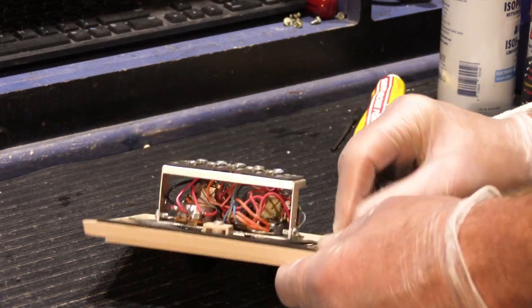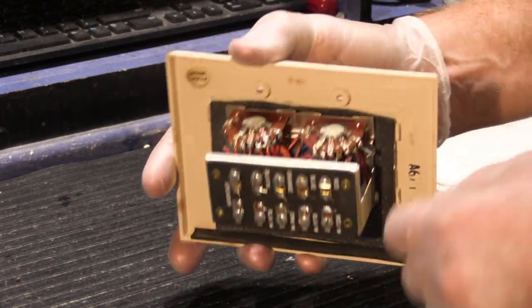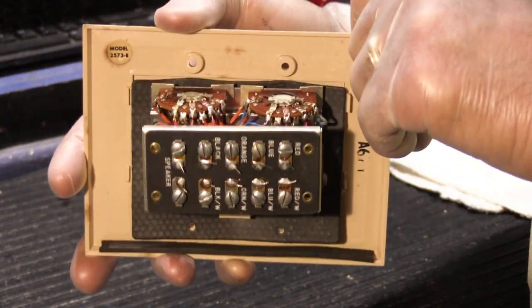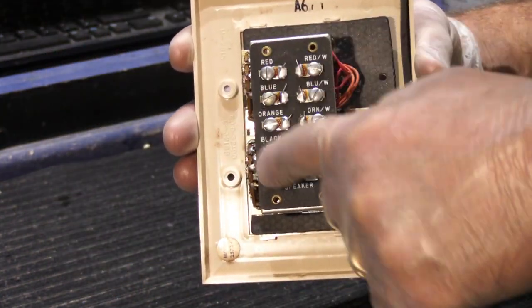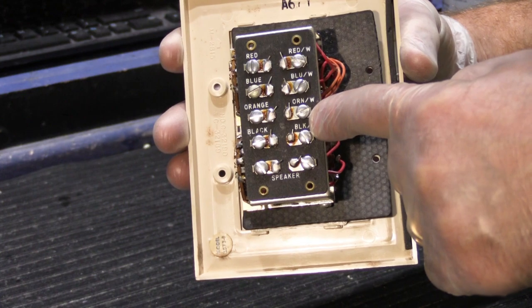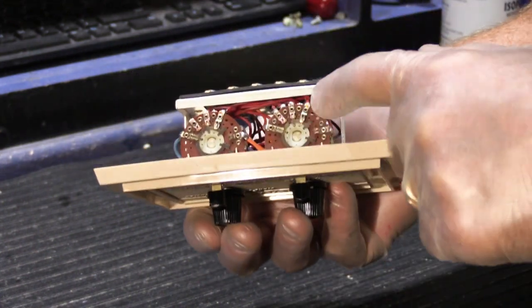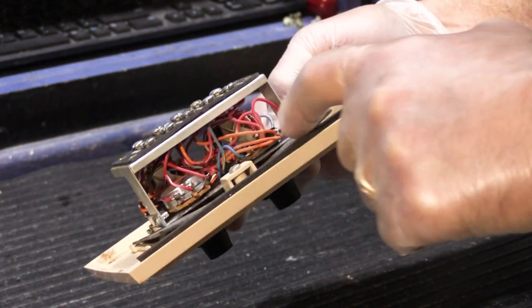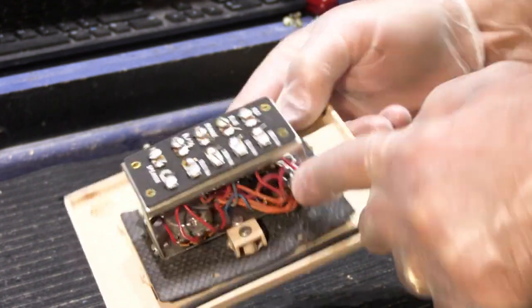What I'm going to show you specifically here is how to clean the intercom control switches. On the back of it, you have the terminal block where the wiring from the master station is terminated, and then you have your two intercom switches here, your two volume controls down here, and your selector switch down here.